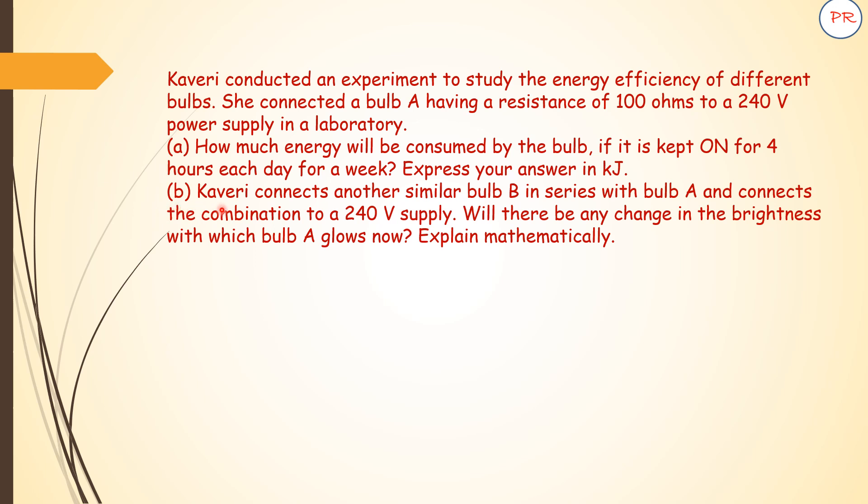And the other part is: Kaveri connects another bulb in series with bulb A and connects the combination to a 240 volt supply. Will there be any change in the brightness with which bulb A glows? Explain it mathematically. Stepwise marks are there, so first we will see the answer for part A.